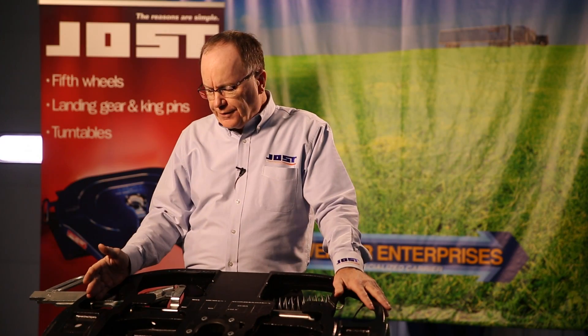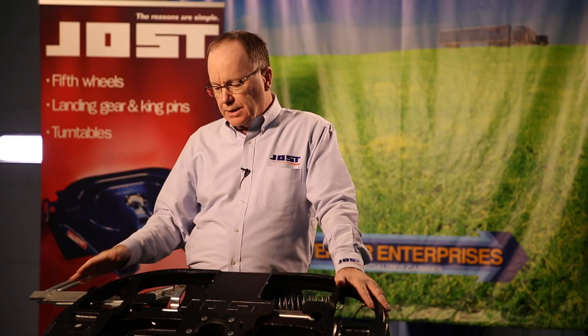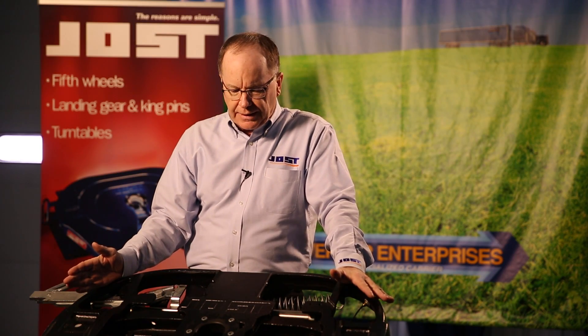With Jost fifth wheels, you have four main components: the release handle, an operating lever, a locking bar, and lock jaw. The simplest possible locking mechanism there is in the market.